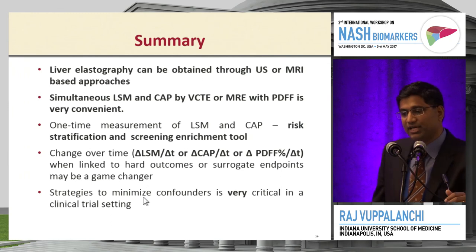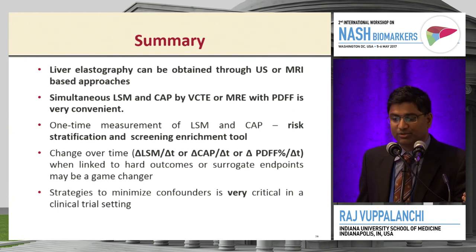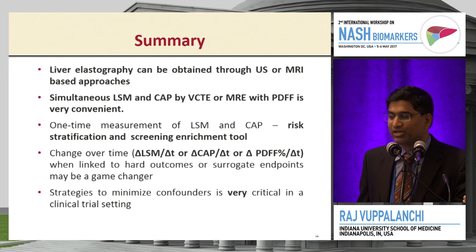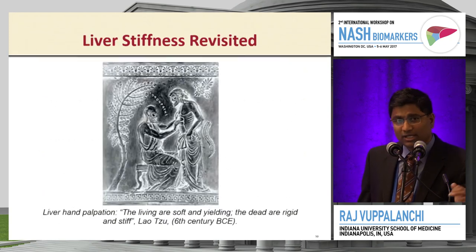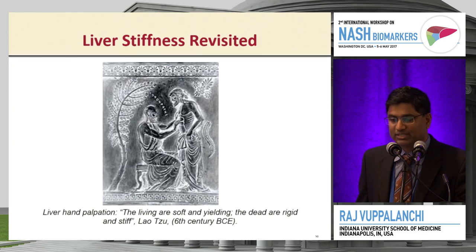In summary, liver elastography can be obtained through ultrasound or MRI. Simultaneous LSM and CAP is very attractive in the clinic. MRE with PDFF seems more precise and useful for clinical trials. Change over time is very important, and we look forward to its correlation with hard outcomes or surrogate endpoints. Strategies to minimize confounders are critical in a clinical trial setting. In this age of disruptive technology, liver elastography is essentially the same as liver palpation — as Lao Tzu noted in the 6th century BC, the living are soft and yielding, the dead are rigid and stiff — but now done with disruptive technology.